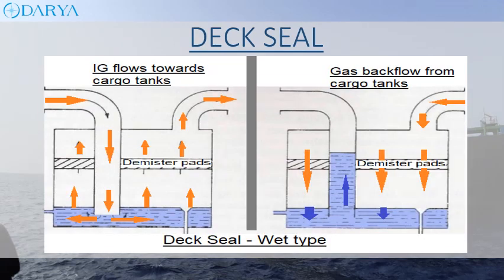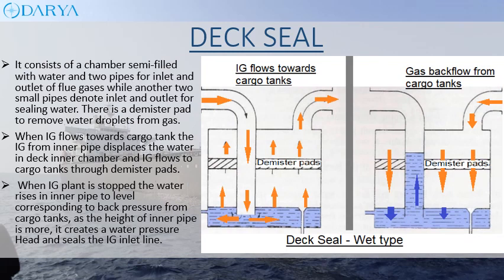The deck seal consists of a chamber semi-filled with water and two pipes for inlet and outlet of flue gases, and two small pipes for inlet and outlet of sealing water. There is a demister pad to remove water droplets from the gas. When IG flows towards the cargo tank, the IG from the inner pipe displaces the water in the deck inner chamber and IG flows to cargo tanks through demister pads. When the IG plant is stopped, water rises in the inner pipe to a level corresponding to back pressure from the cargo tanks; as the height of the inner pipe is greater, it creates a water pressure head and seals the IG inlet line.